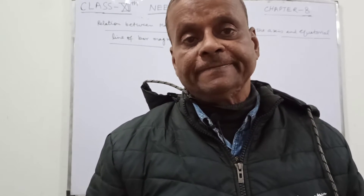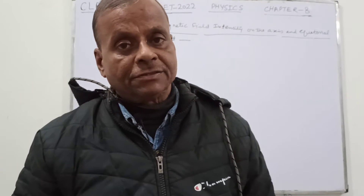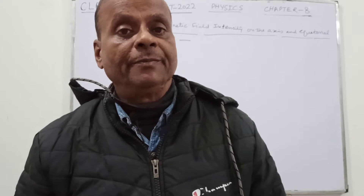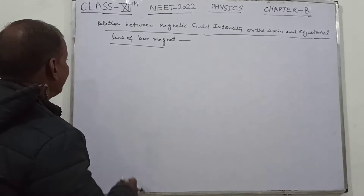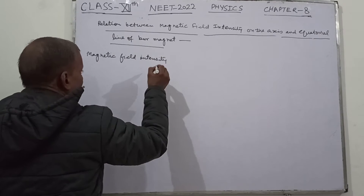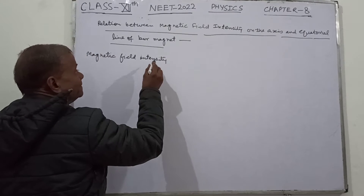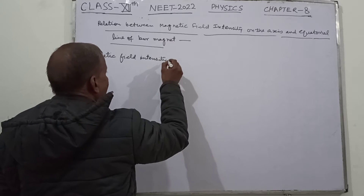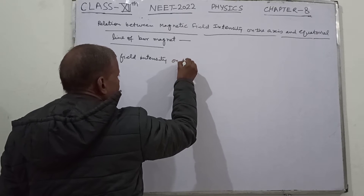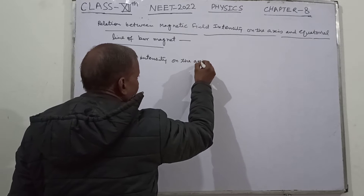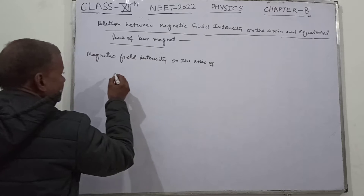I will tell you about the relation between the magnetic field intensity on the axis and on the equatorial line of the bar magnet. Magnetic field intensity on the axis of the bar magnet.